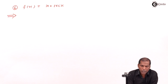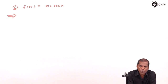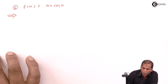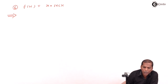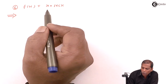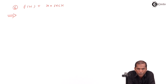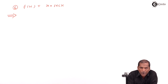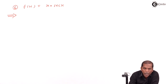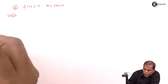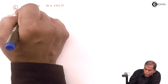Hello friends. Now we see problem number six, which is also based on the first principle of derivative from the chapter on differentiation. The problem number six is f(x) = x·sec(x), and by using the first principle of derivative we have to find f'(x). So now let's see the solution.